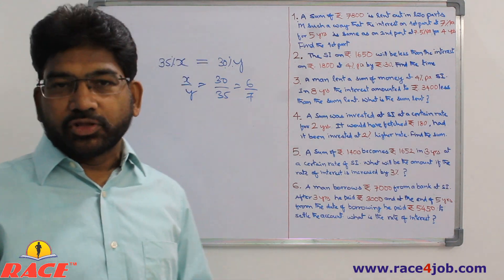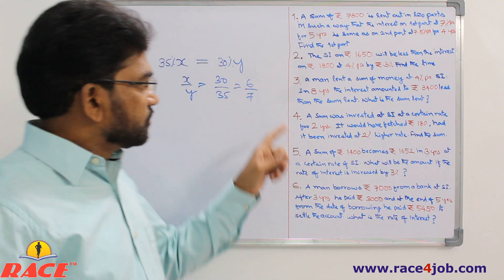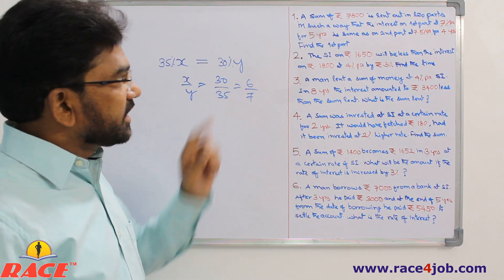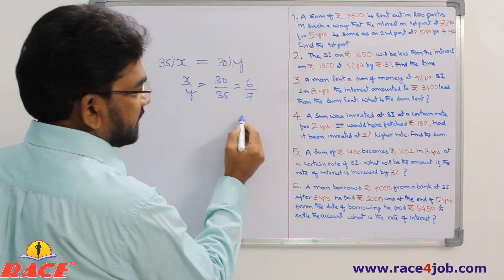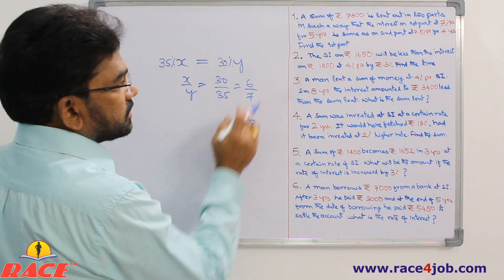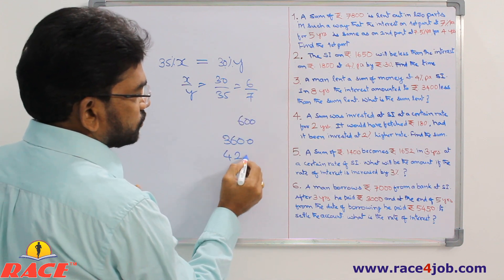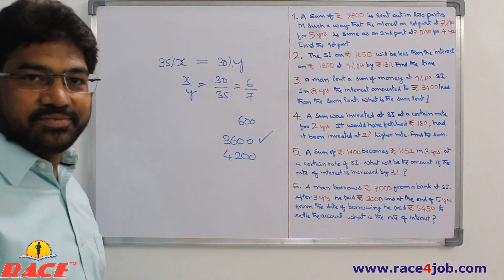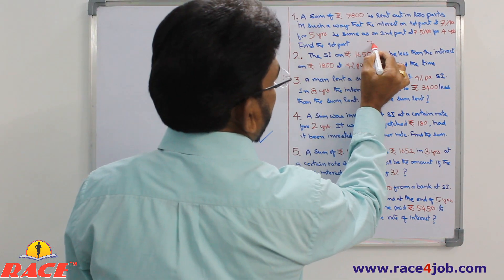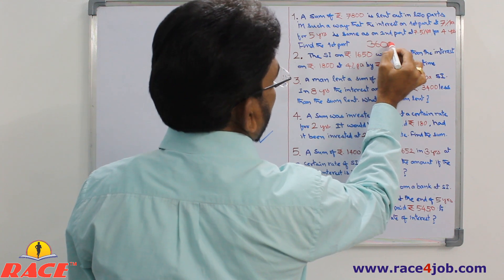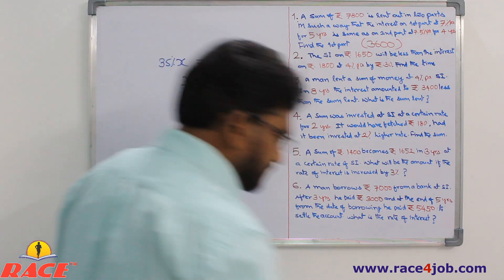So the ratio is 6:7. Out of the total 7800, the first part is 6 parts and the second part is 7 parts. Total is 13 parts. 7800 ÷ 13 = 600 per part. So 6 parts = 3600 and 7 parts = 4200. The first part is 3600. That is our answer. Very simple.